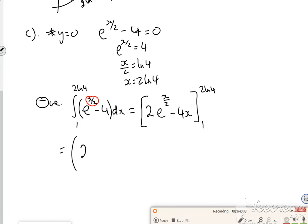So if I put in the 2 log 4, it's 2e to the 2 log 4 over 2 minus 4 lots of 2 log 4 minus putting in the 1. I'm just going to pause it while I fill in the other bit.